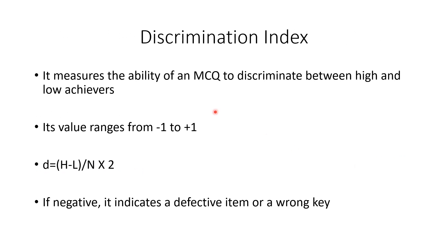The discrimination index measures the ability of an MCQ to discriminate between high and low achievers. Its value ranges from minus 1 to plus 1 and is calculated by the formula: D = (H − L) / (N / 2). H, L, and N have the same values as in the difficulty index formula. If we get a negative discrimination index, it indicates that the item is either defective or the key is wrong, so it needs to be looked into.